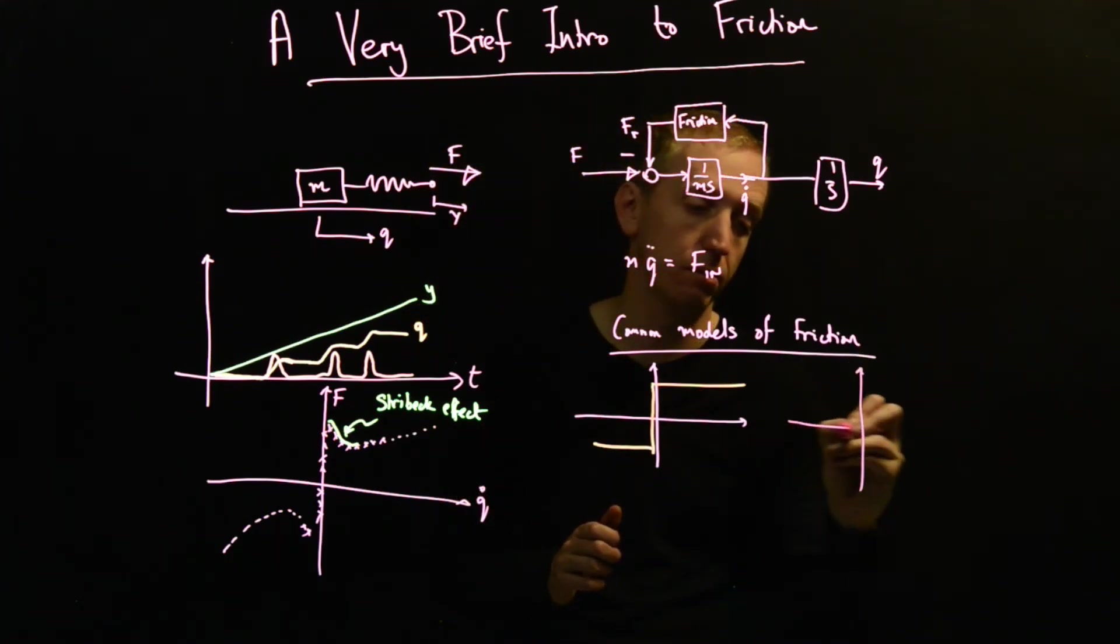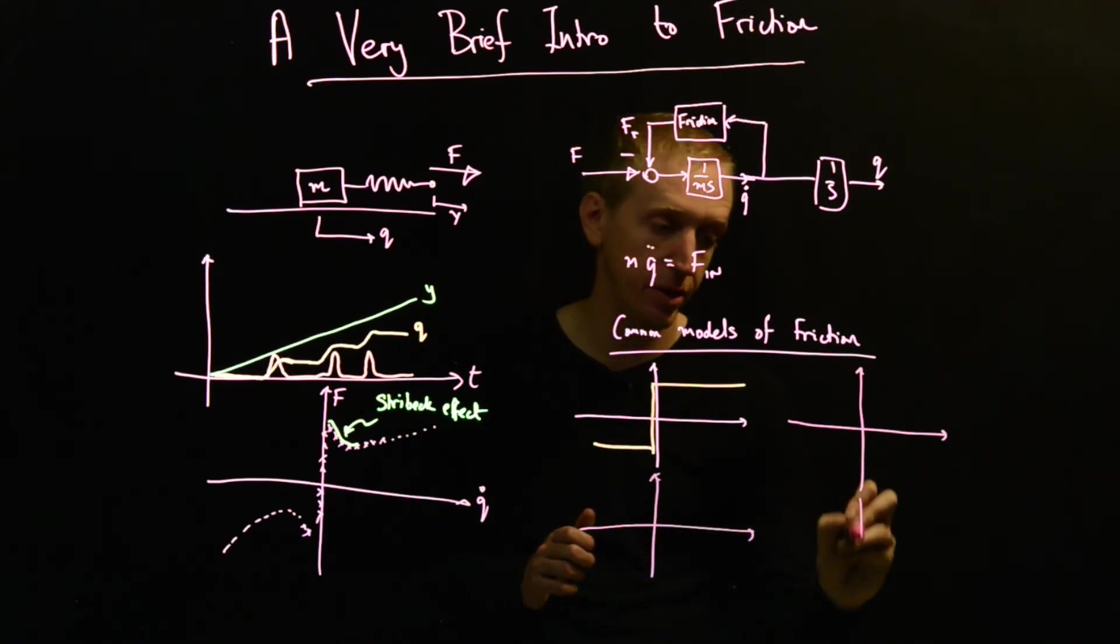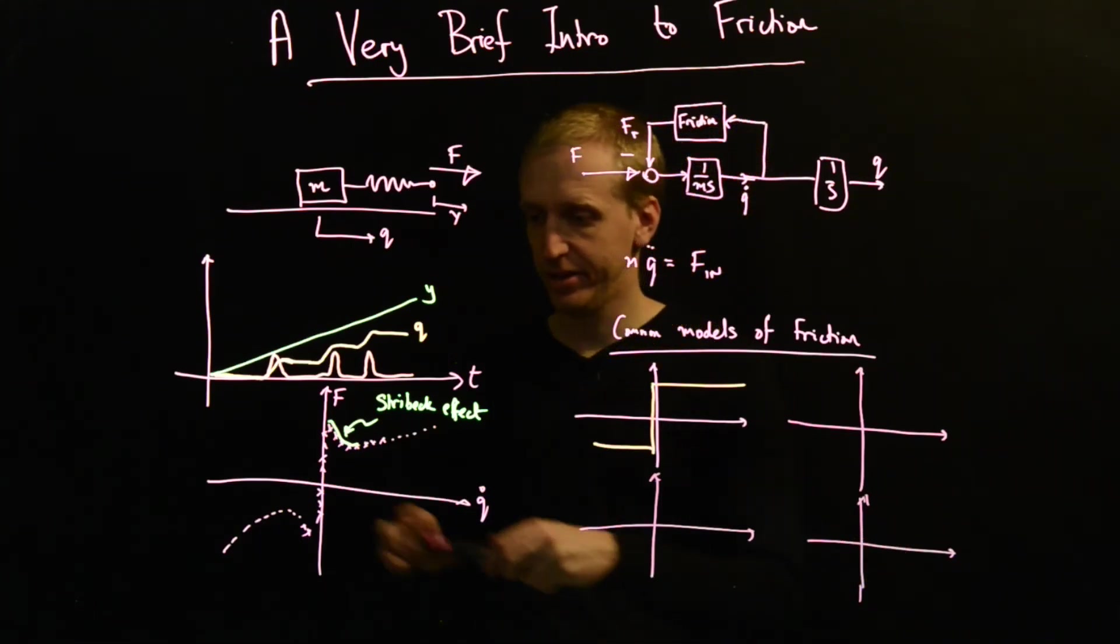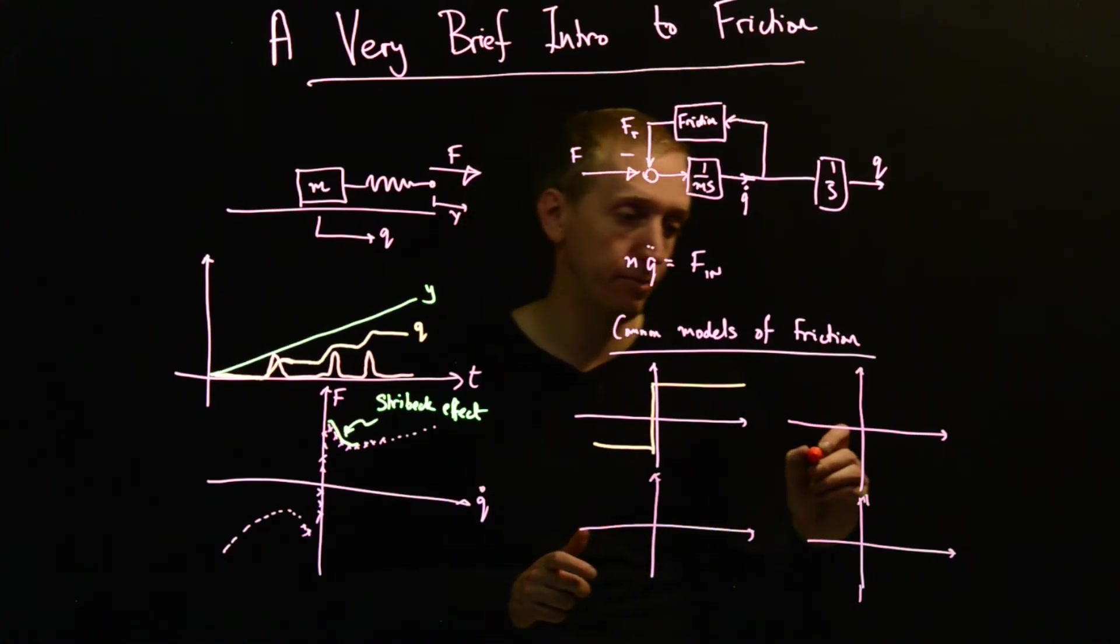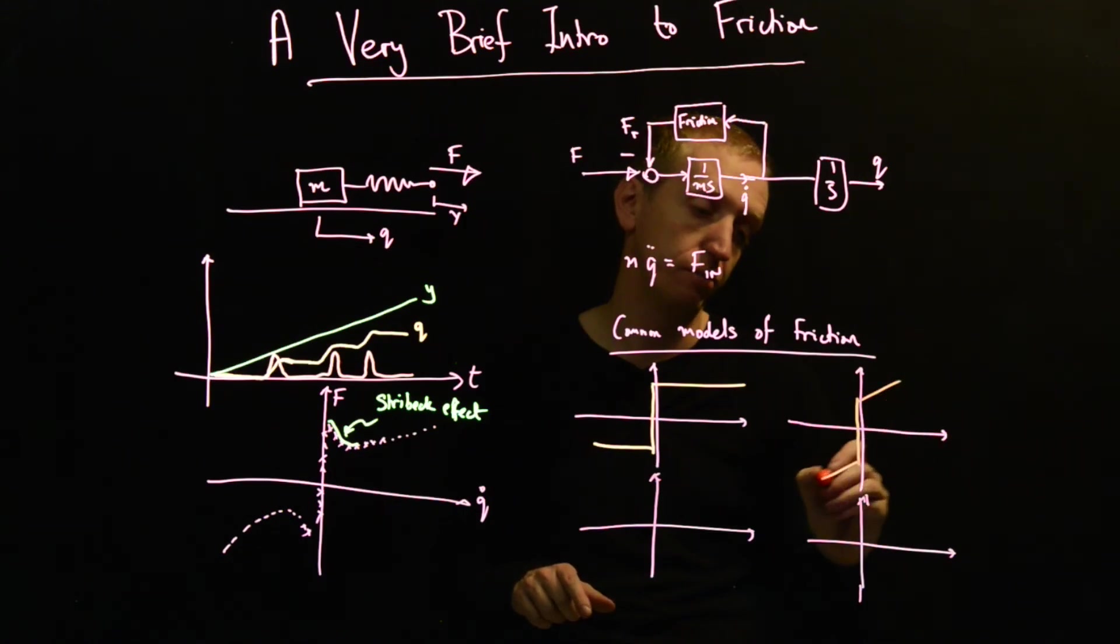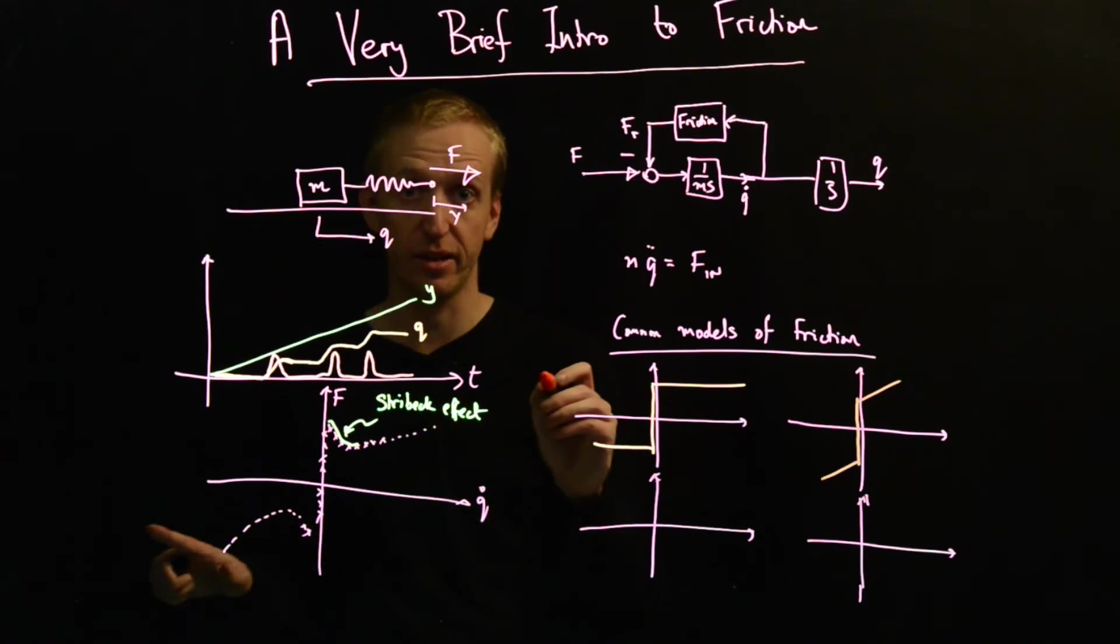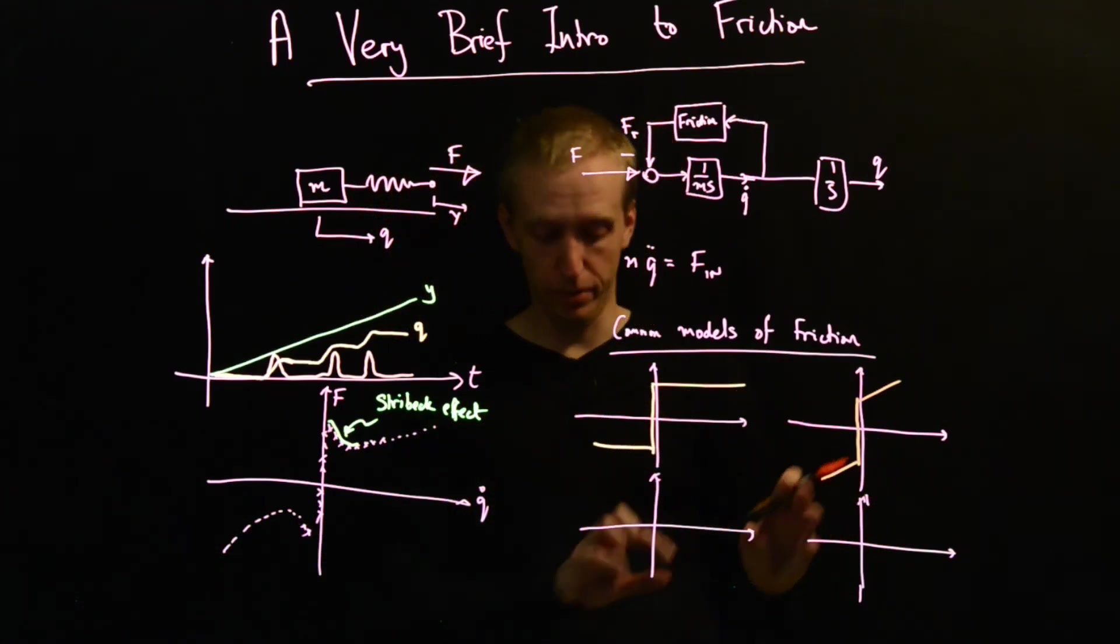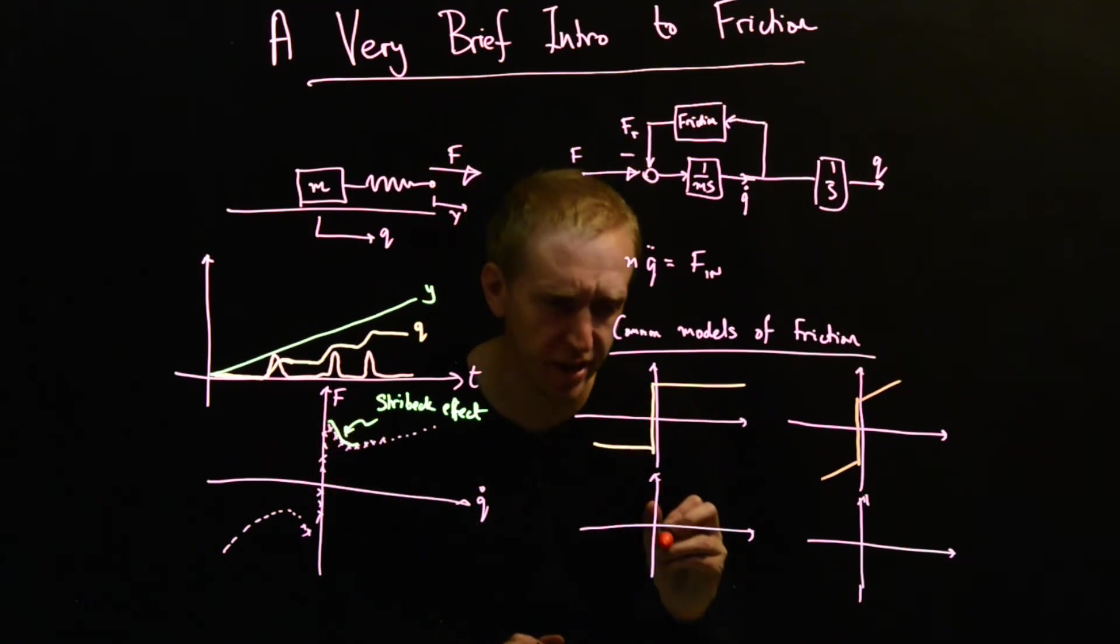And then there's maybe three more that are worth mentioning, that are really just trying to slowly build up the features of these curves in a little bit more detail. So rather than having a pure relay here, sometimes you'll see friction modeled more like this. Now we're trying to capture the effect that the force does increase with velocity, rather than just saying that it remains constant. And then these two other models try to capture this Stribeck effect a little bit.